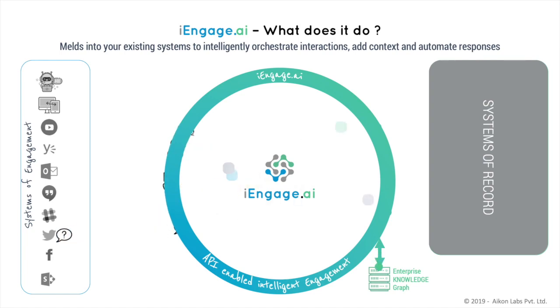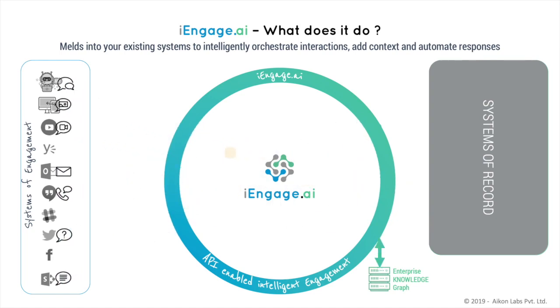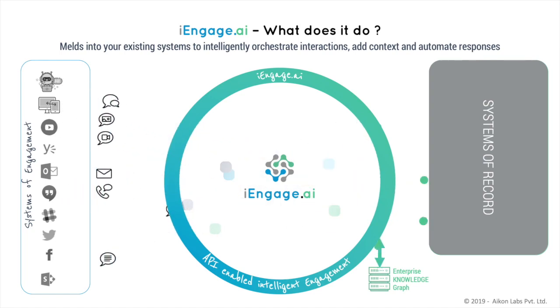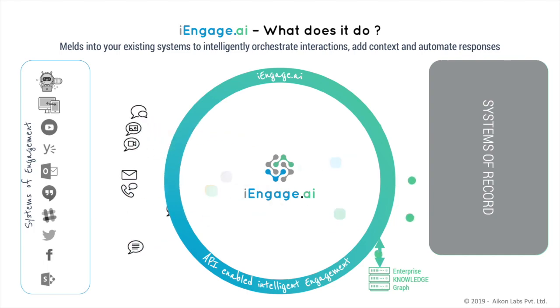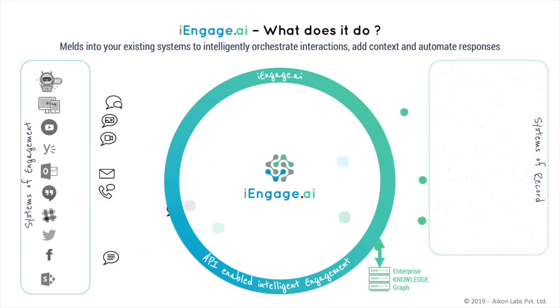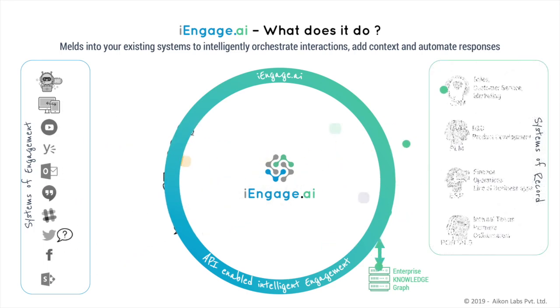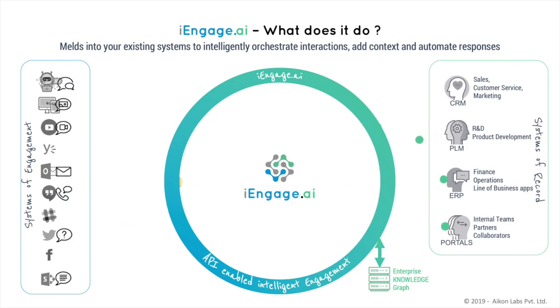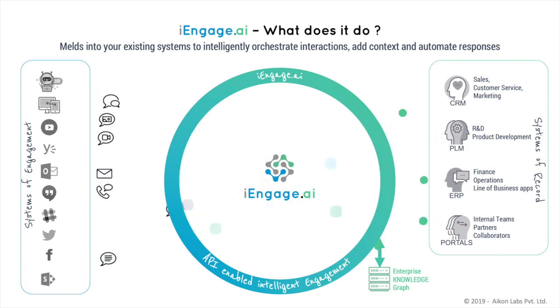The iEngage platform can plug and play with systems of engagement made up of channels like chatbots, messengers, Twitter handles, and email, through which interactions flow into systems of record like CRM, ERP, and other operation systems that manage transactions within an enterprise.